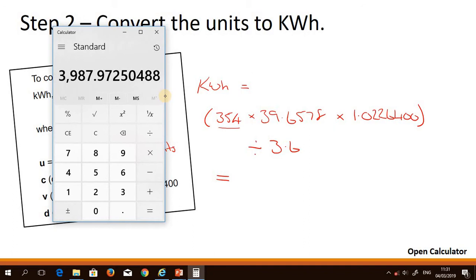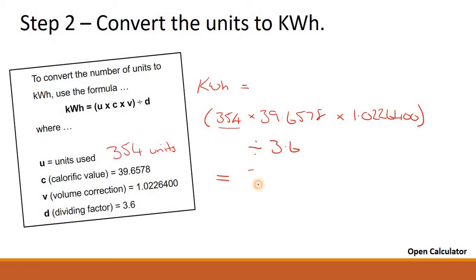But also, if we look at the previous bill, that's what they do as well. They round their kilowatt hours to two decimal places. So I can see no reason why we don't do the same thing. So our answer then for the kilowatt hours that we've used is 3,987.97 kilowatt hours.